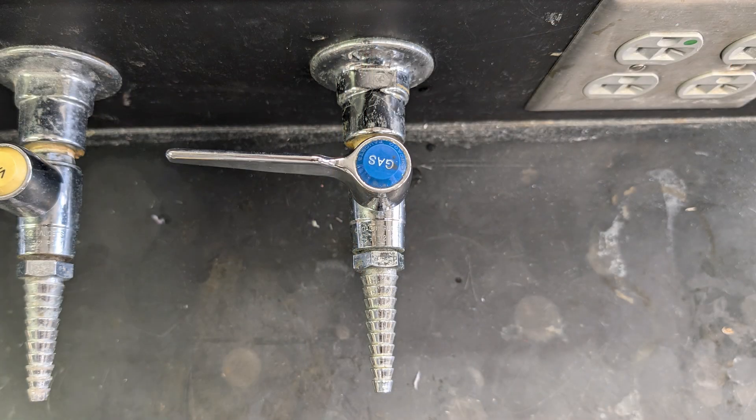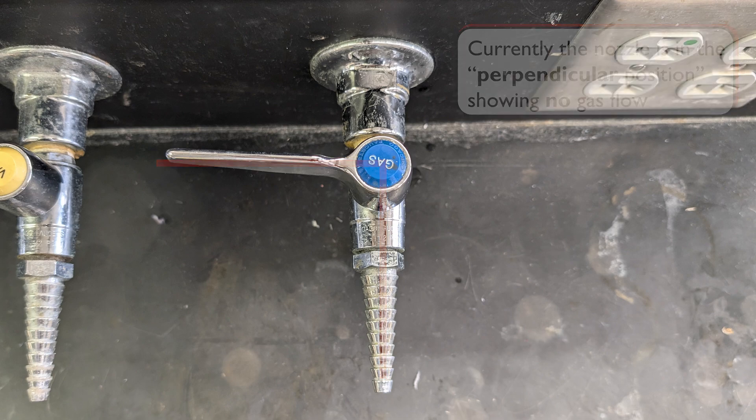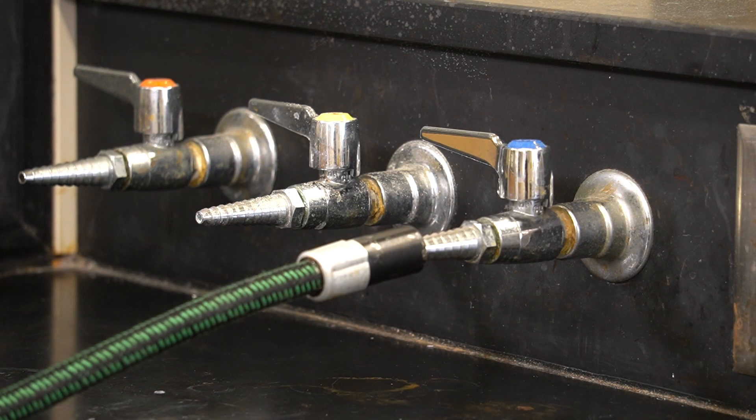At our bench, we have a nozzle labeled gas. This nozzle provides the natural gas that we will be using to produce the flame. We will attach tubing here, which will extend from this nozzle to our burner's gas intake.